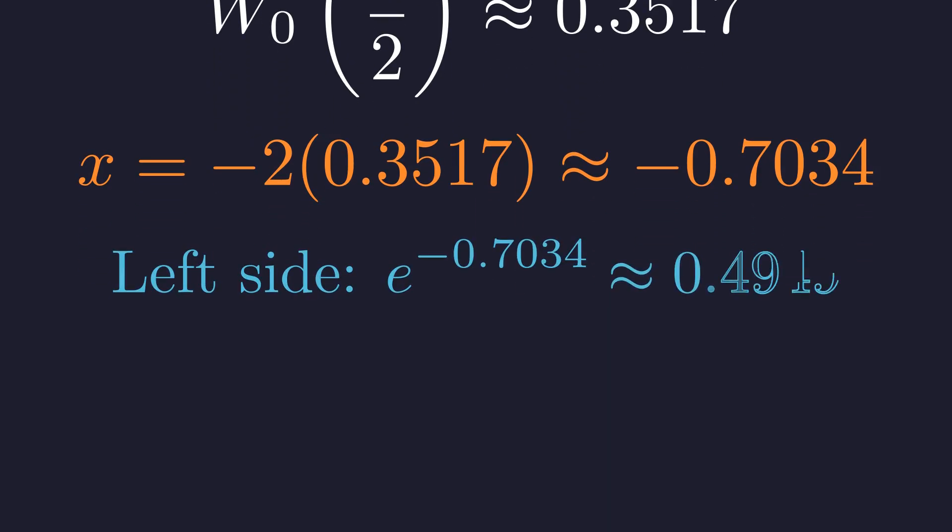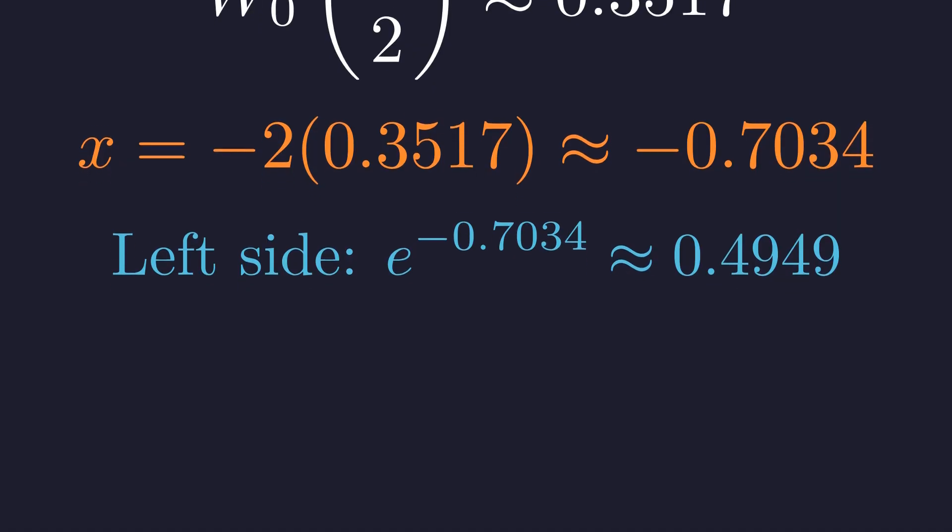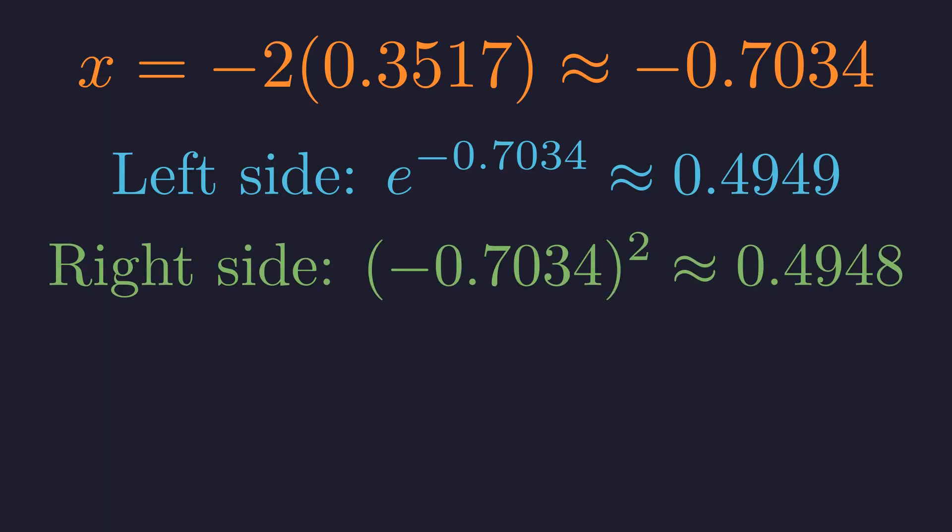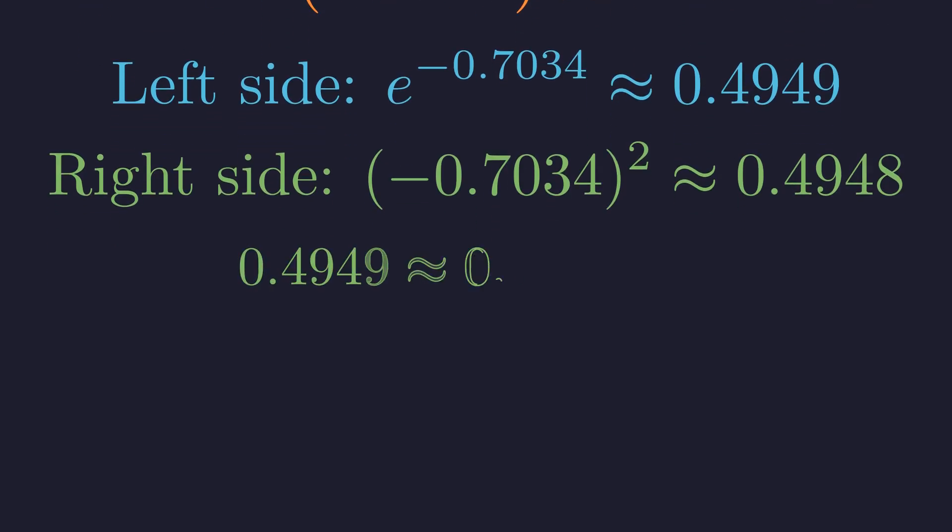e to this power gives us about 0.4949, and this value squared gives us about 0.4948. They match to three decimal places. Our solution checks out.